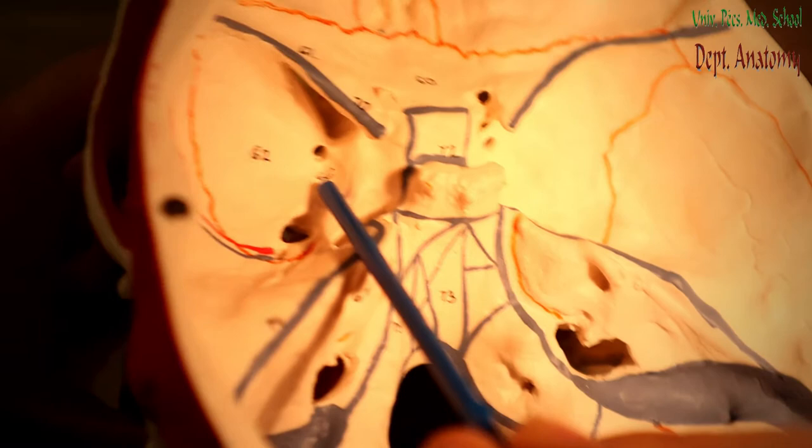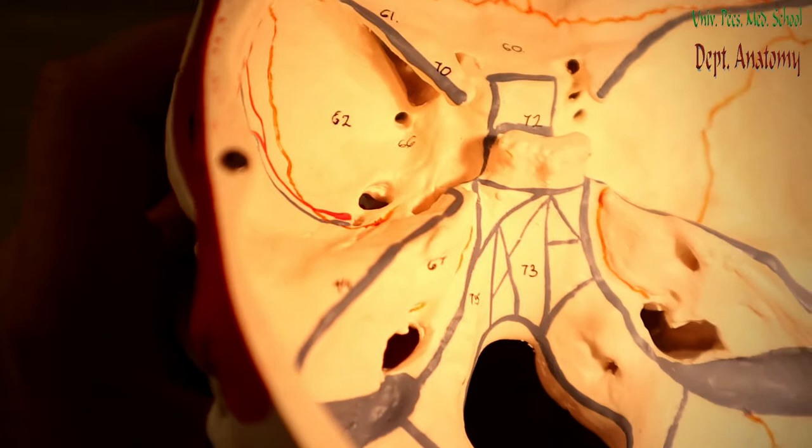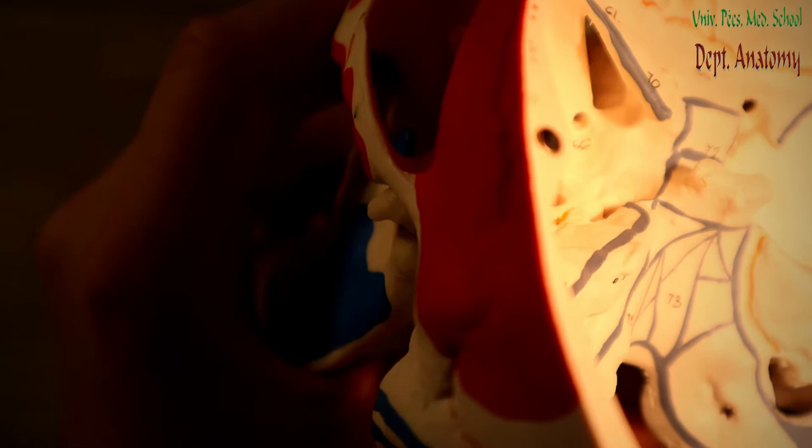The next hole is round — that's why it's called foramen rotundum. The foramen rotundum connects the pterygopalatine fossa with the middle cranial fossa. Here you find the maxillary nerve, which is the second branch of the trigeminal and is also pure somatosensory.